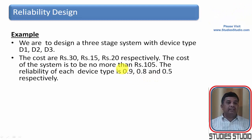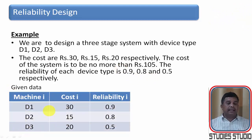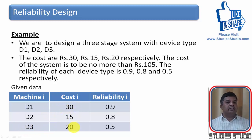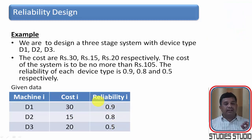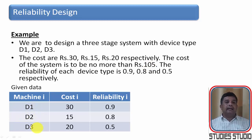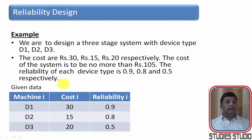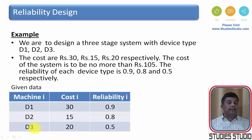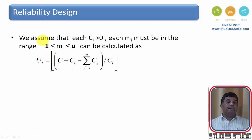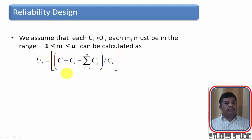Let us understand this with an example. We are given three machines D1, D2, D3 with costs 30, 15, and 20 respectively and reliabilities 0.9, 0.8, and 0.5 respectively. We are given a budget of 105. We want to use this budget to buy some copies of D1, D2, and D3 to maximize total system reliability. First we must find an upper bound — how many more copies of each device we can purchase.